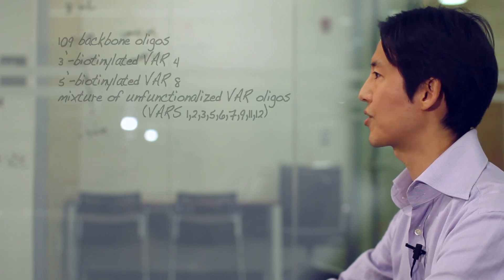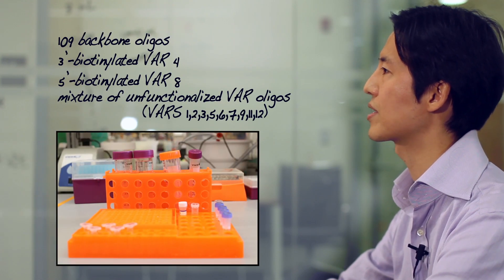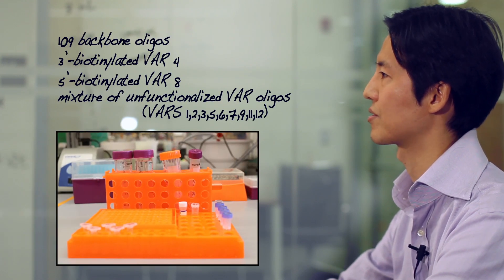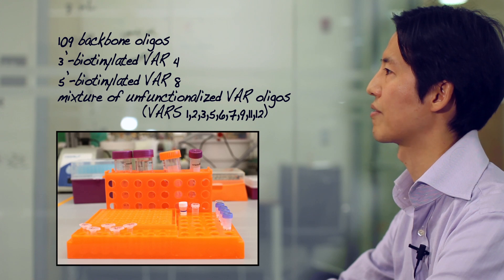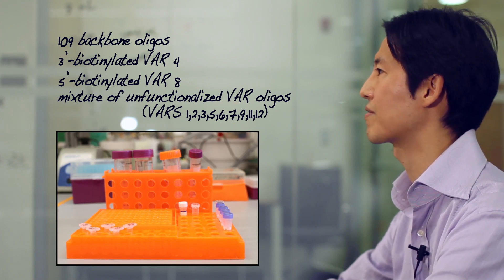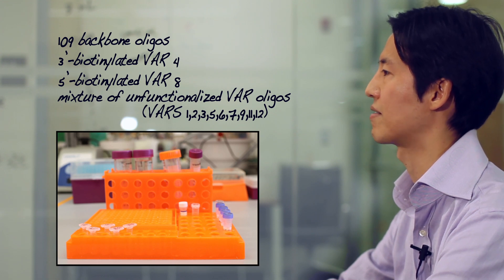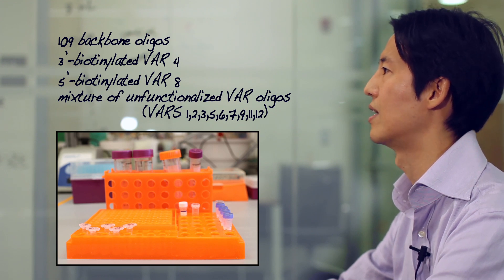The starter kit includes a mixture of the 109 backbone oligos, a mixture of 3'-biotinylated VAR4 and a 5'-biotinylated VAR8, and a mixture of unfunctionalized versions of the remaining 10 VAR oligos.